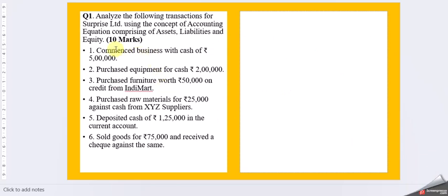First question: analyze the following transactions for Surprise Limited using the concept of accounting equation comprising of assets, liability and equity. This is for 10 marks question. You have to come close to 1000 words as much as possible. And again, do not copy paste any content in your assignments. When you're writing an assignment in Word, try to get the reference or refer any document, but write it in your own words. Do not copy paste, you'll be getting a lot of trouble when you check for plagiarism and want to eliminate it.